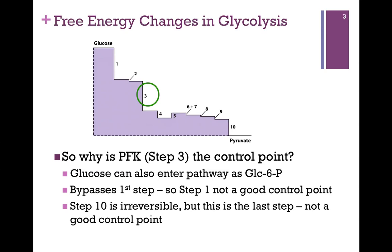Remember, our next possible control point is Step 10, but that's the last step. Why would you run all the steps of the pathway, only to get to the end and say, oh well, never mind? Not a good control point. It makes sense to make it earlier in the pathway, and it's that large favorable change in delta G that has the greatest impact for control through the pathway. So our control point is Step 3.